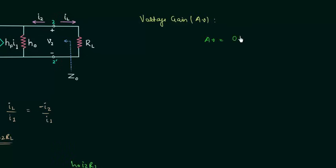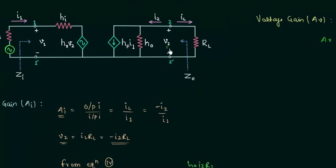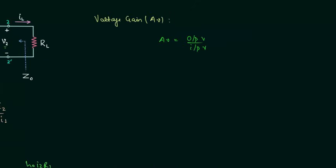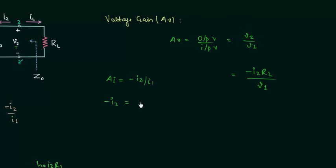Voltage gain AV is equal to the ratio of output voltage to the input voltage. From the circuit, the output voltage is V2 and the input voltage is V1, so the voltage gain equals V2 by V1. The output voltage V2 is equal to minus I2·RL, so we have minus I2·RL in the numerator and V1 in the denominator. The current gain Ai is equal to minus I2 by I1, so minus I2 equals I1·Ai.